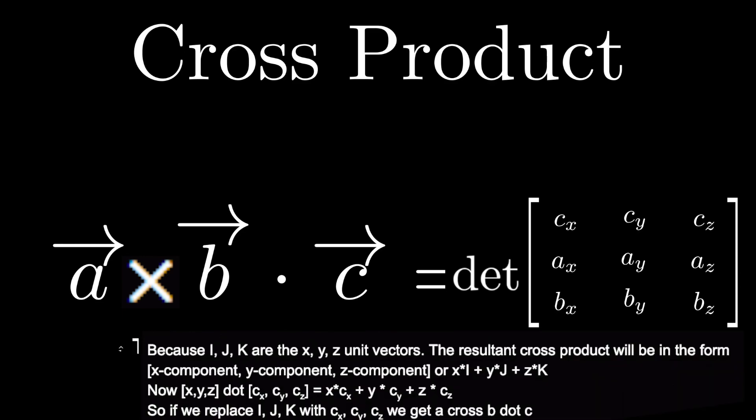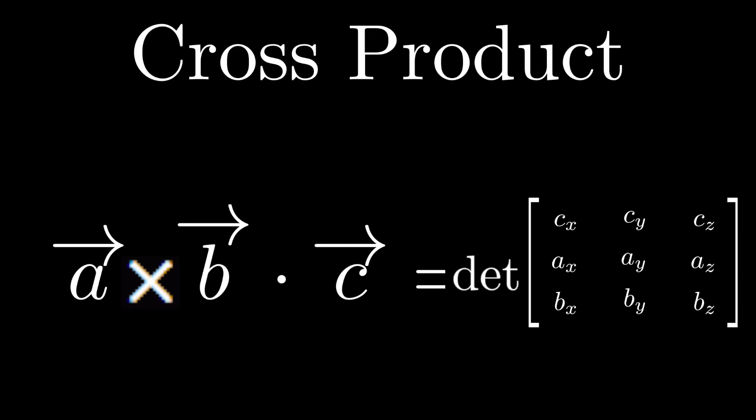Because i, j, and k are the x, y, and z unit vectors, the result of the cross product will be in the form of x times i plus y times j plus z times k. Now, the matrix (x, y, z) dotted with the matrix (cx, cy, cz) will equal x times cx plus y times cy plus z times cz. So if we replace the i, j, and k with cx, cy, and cz, you can get A cross B dot C. If we can show that A cross B dot C is the volume of the parallelepiped, we can just plug in the determinant of this matrix and get the answer.